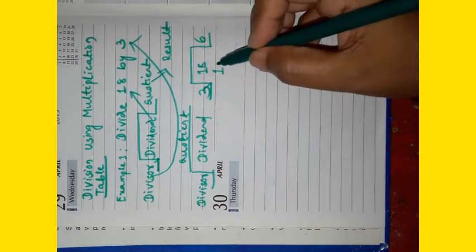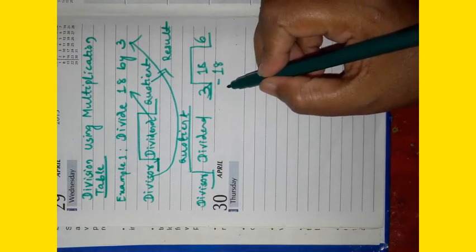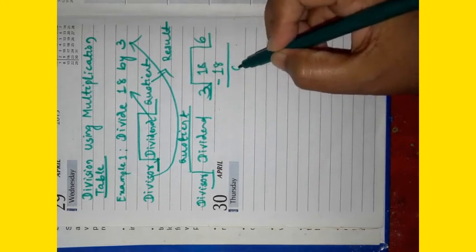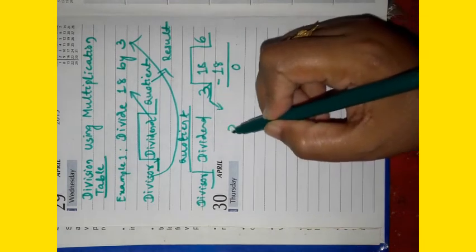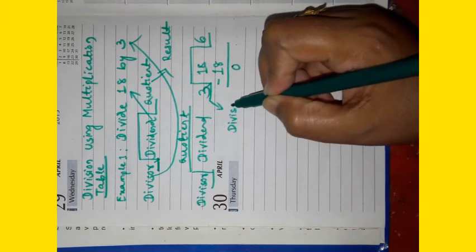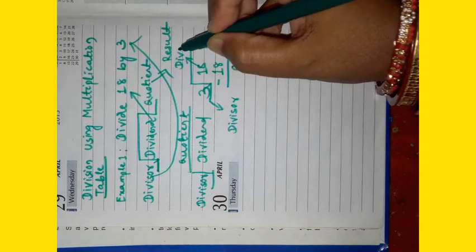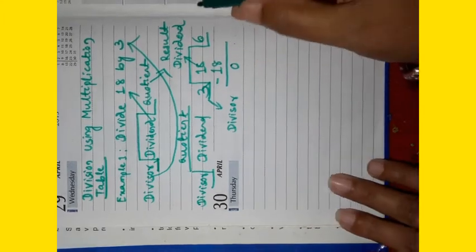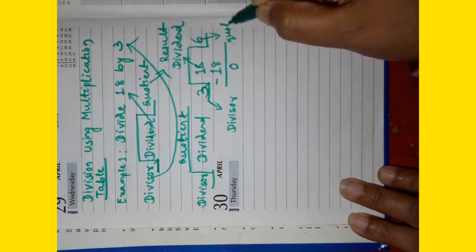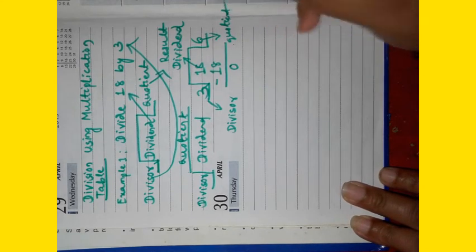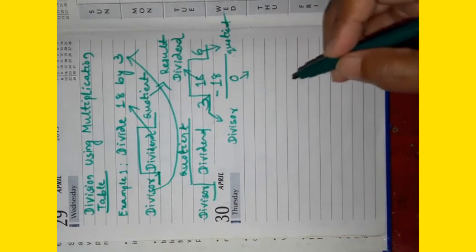And 3 sixes are 18. We have to write down 18 below 18. Then subtract. It is 0. Here it is divisor, it is dividend, and 6 is quotient. And here 0 is known as remainder.